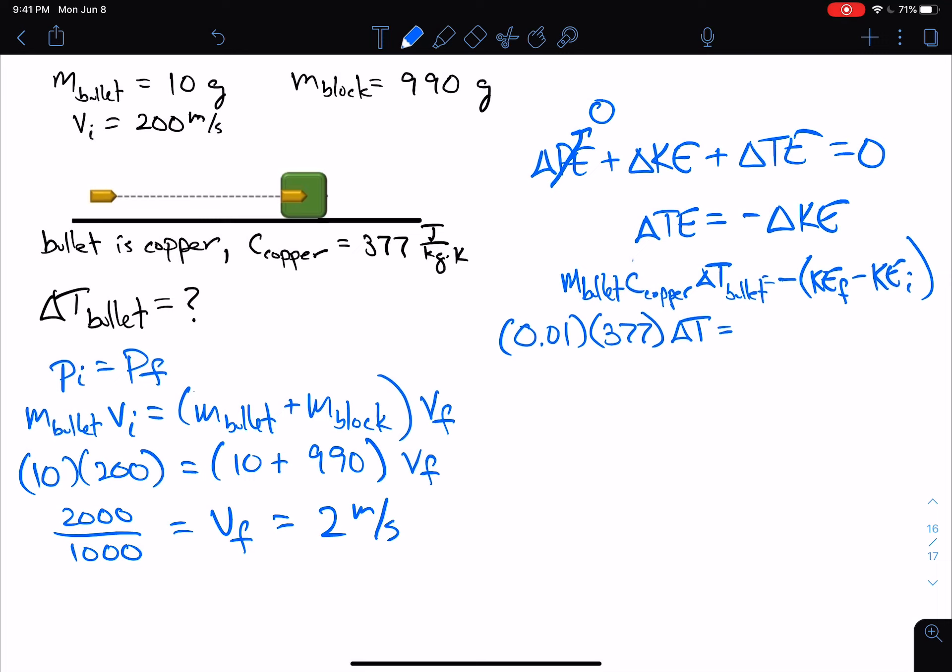And this minus sign can be distributed, so this is the initial kinetic energy minus the final kinetic energy. And 0.01 times 377 is 3.77 times the change in temperature. So this becomes 1/2, so initially it's just the mass of the bullet, its initial speed squared, minus 1/2. I've got the mass of the bullet, plus the mass of the block, plus my V final squared.